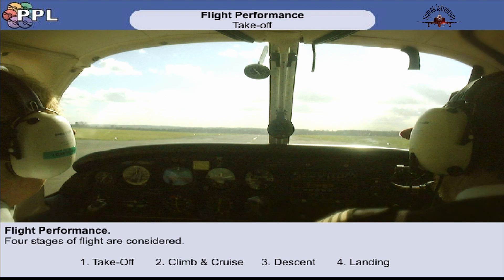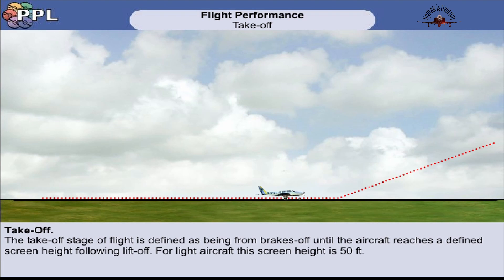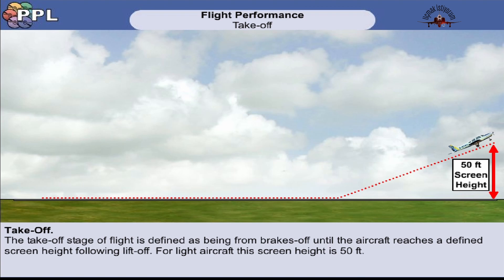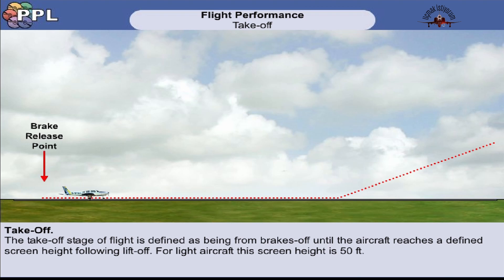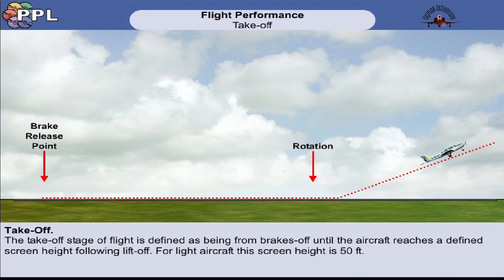This first lesson deals with the take-off. The take-off stage of flight is defined as being from brake release until the aircraft reaches a defined screen height. In light general aviation aircraft, this screen height is 50 feet, as shown. As the aircraft accelerates down the runway, rotation will be initiated at a specific speed. The aircraft pitch will increase and eventually the aircraft will lift off and climb to the screen height.